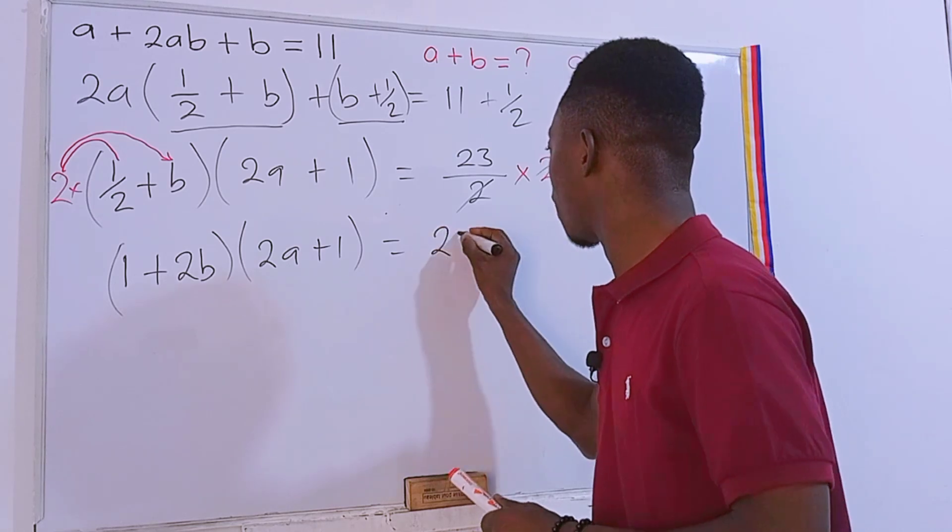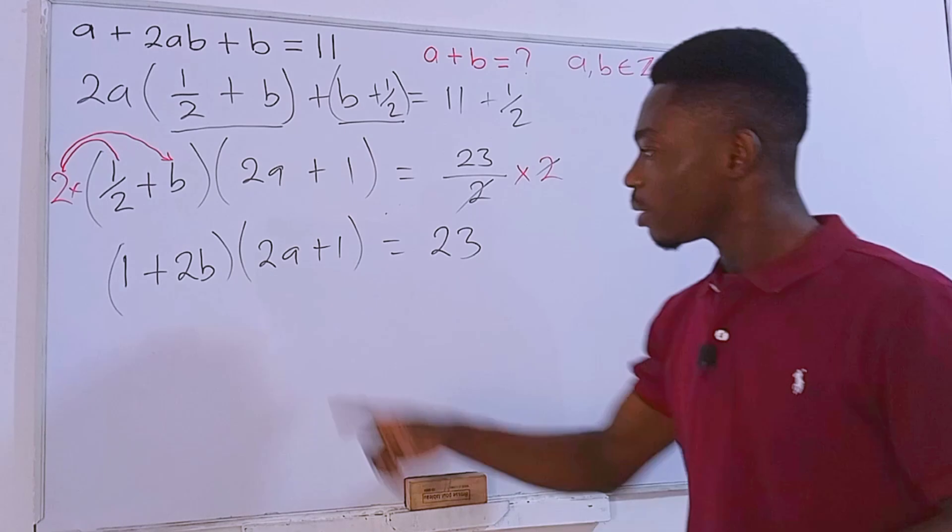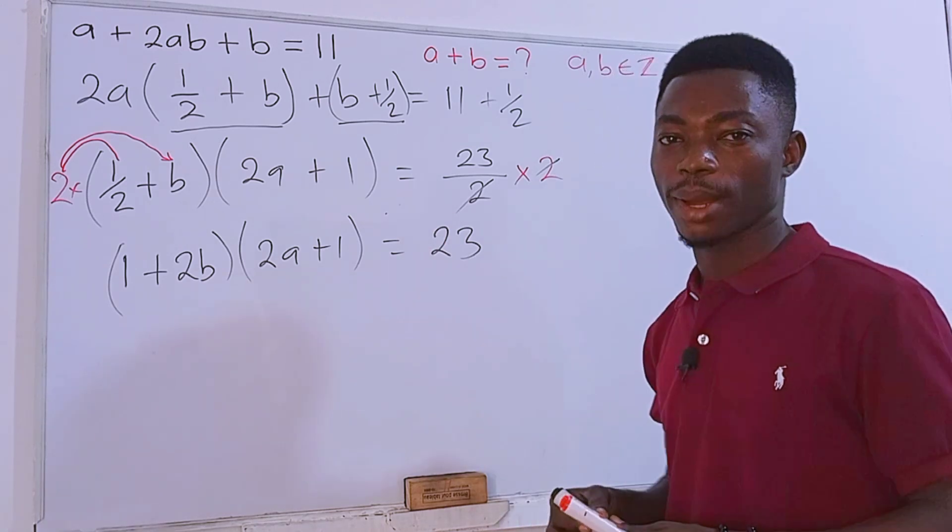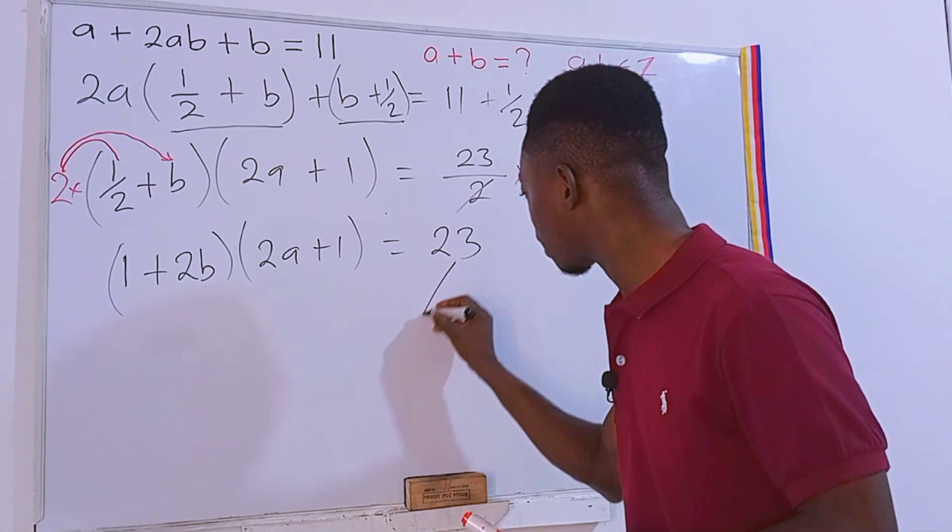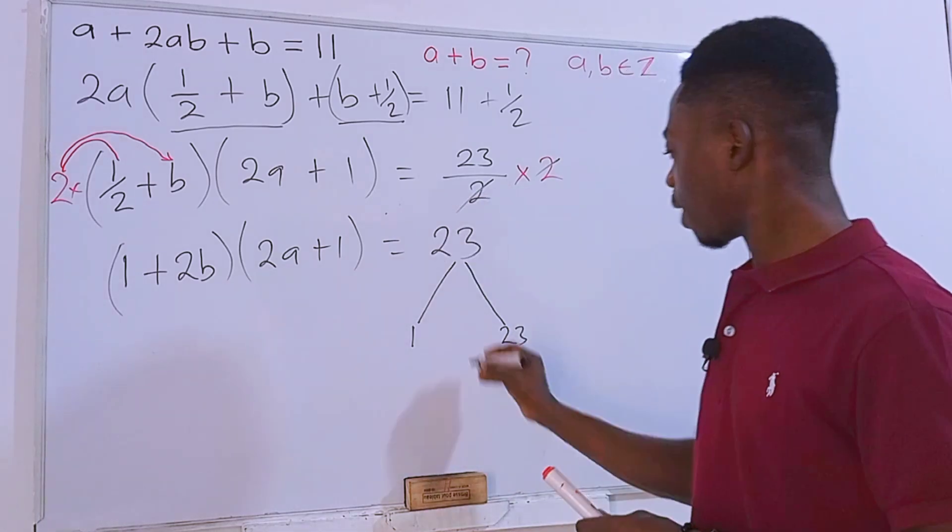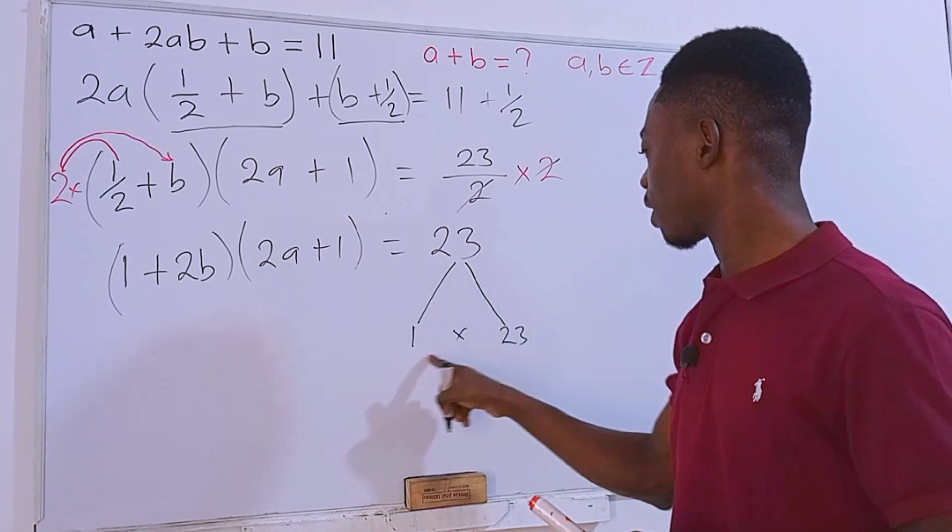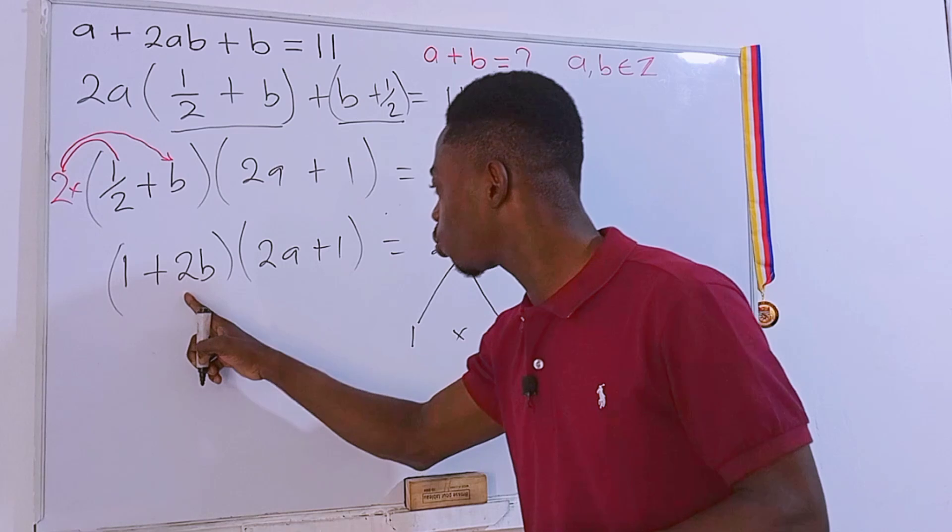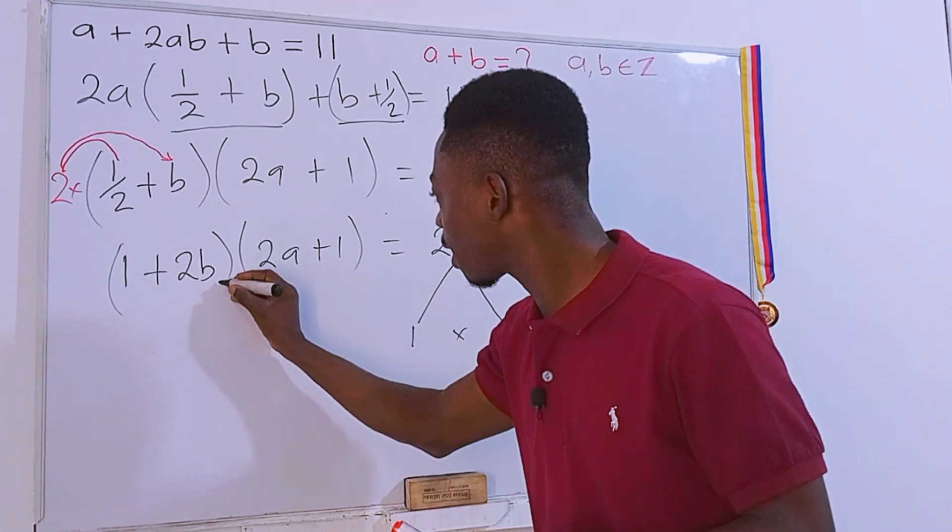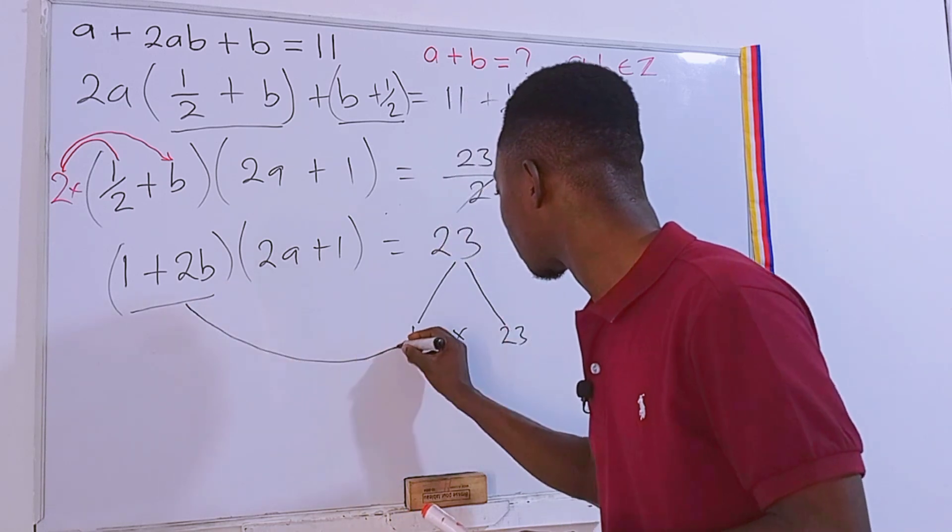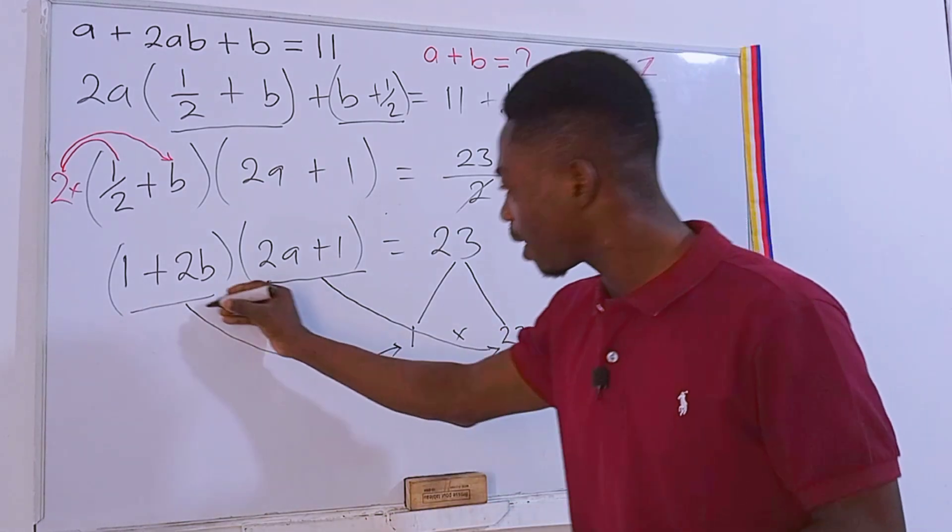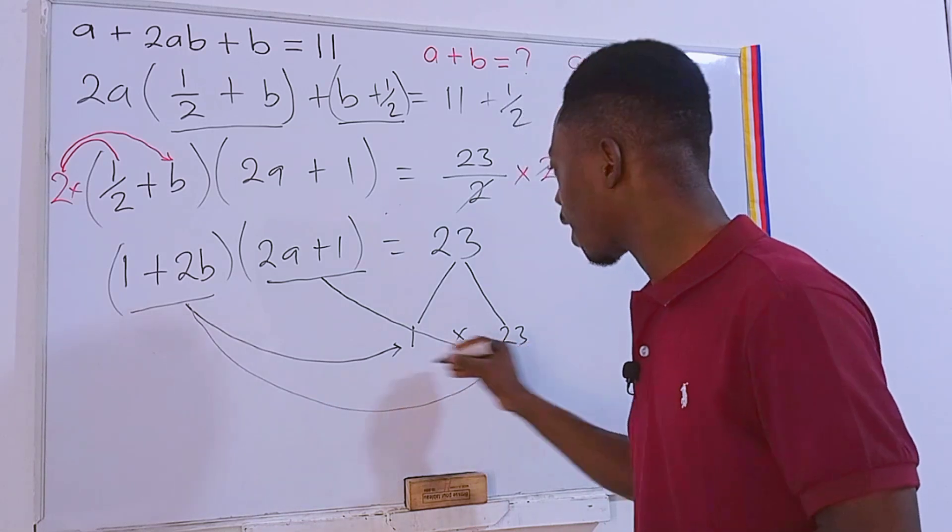Easy! Product of two factors is 23. And of course, this 23 right here is a prime number. Factors of 23 is just 1 and 23 itself. If we multiply them, it's just like this: 1 times 23. (1 + 2b)(2a + 1) is also 23. In fact, we can say that the whole of this right here is just 1, and then the whole of this is the 23 here. Or this same thing can be 23, and then this one can be 1.